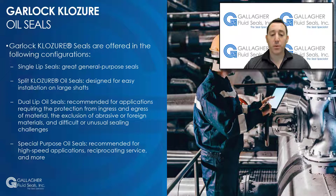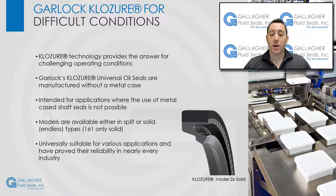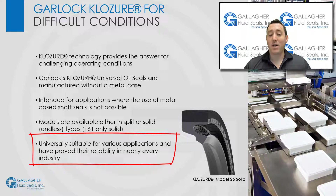And lastly, special purpose oil seals. These are recommended for high speed applications, reciprocating service, spherical bearings, tapered roller bearings, and high pressure applications. Closure technology provides the answer for difficult operating conditions. Garlock's closure universal oil seals are manufactured without a metal case and are intended for applications where the use of metal cased shaft seals is not possible. All of these models are available in either split or solid, endless versions. They are, by virtue of their simple design, universally suitable for various applications and have proved their reliability in all sectors of industry.